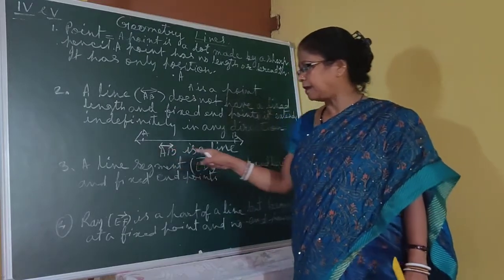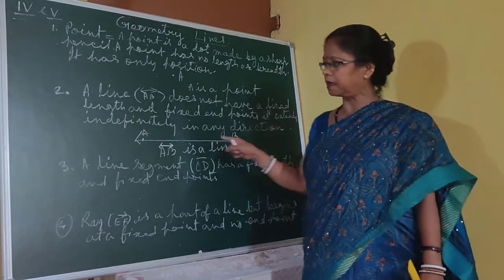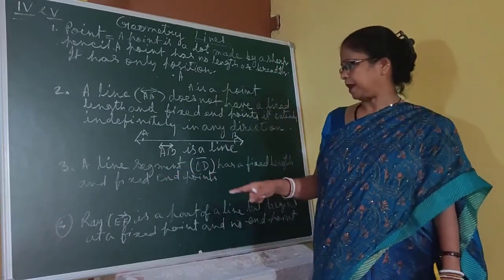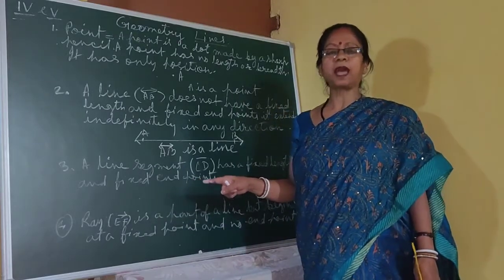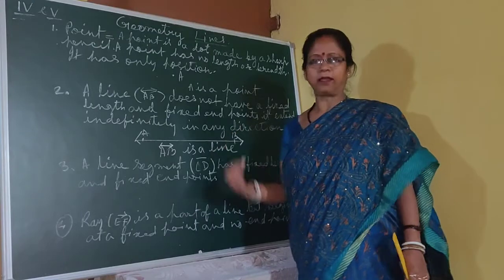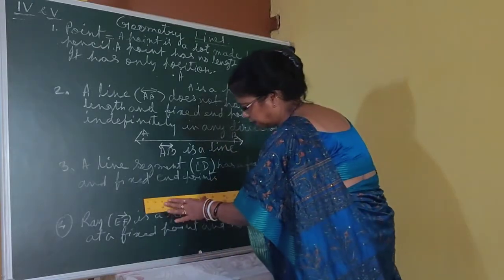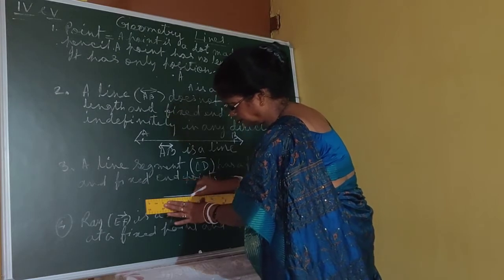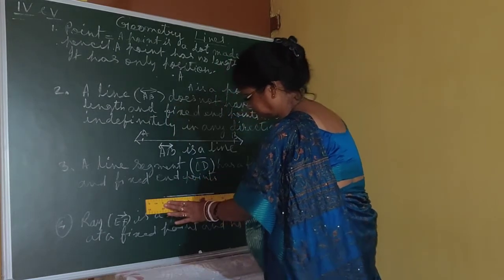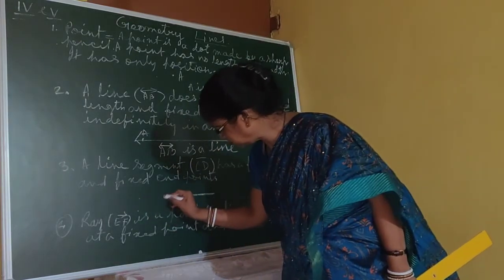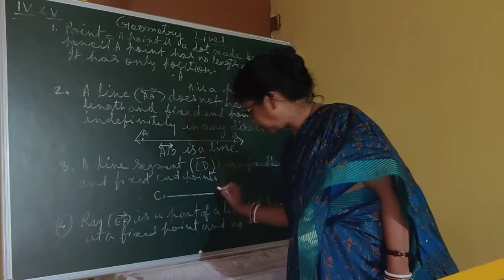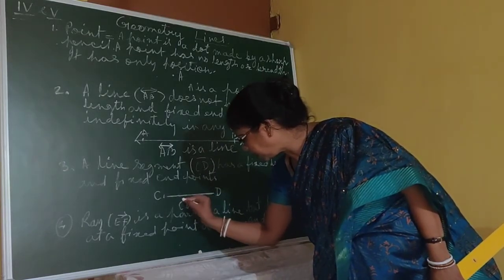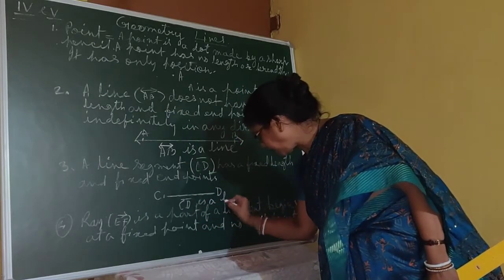A line is a straight line — it can extend indefinitely on both sides and has no end points. Then, what is a line segment? A line segment is a part of a line. That means it has a starting point and an ending point — two fixed points. It is a part of a line. For example, CD is a line segment, denoted as CD with a line on top.